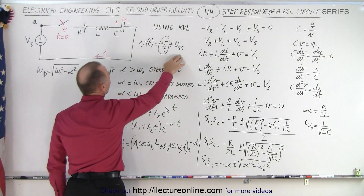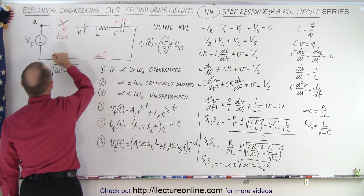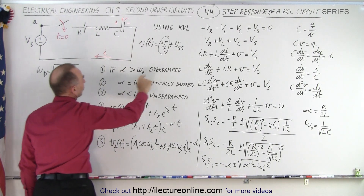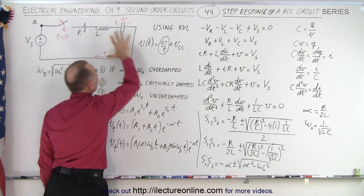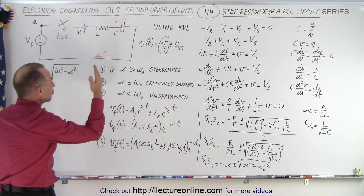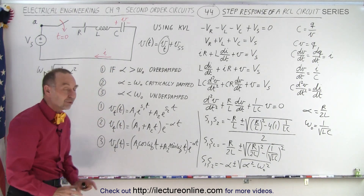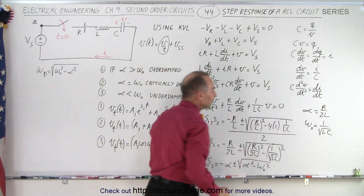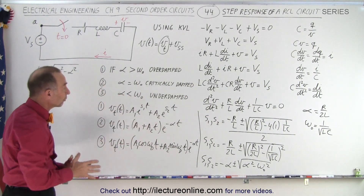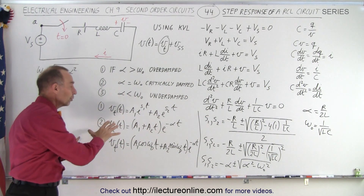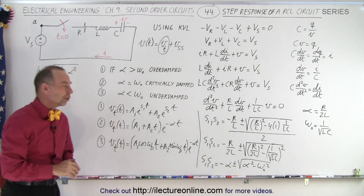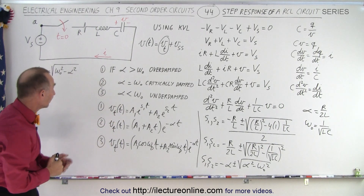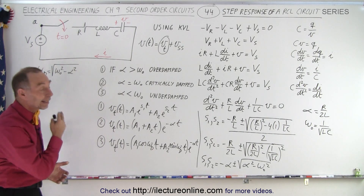The approach is the same as before. The steady-state voltage will be reached when the switch has been closed for a very long time. In this case, the steady-state voltage across the capacitor will be equal to the voltage of the source. The transient voltage is calculated exactly the same as before, with the only difference being that alpha equals R/(2L). This gives us the transient voltage. In the next couple of videos, we'll show how to find the transient current as well. This gives a good start to understanding how we approach the step response of an RCL circuit.